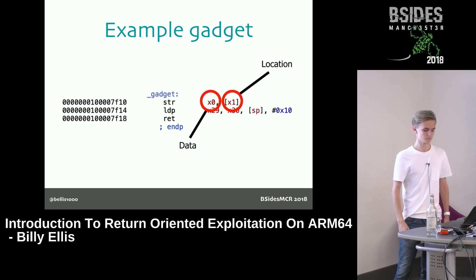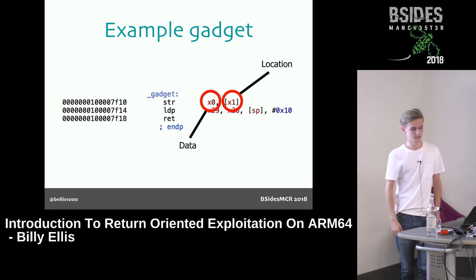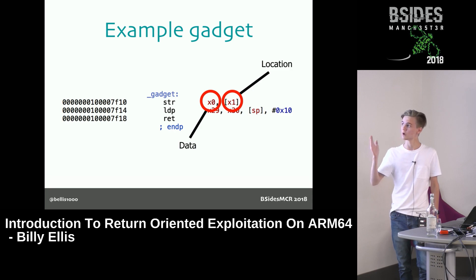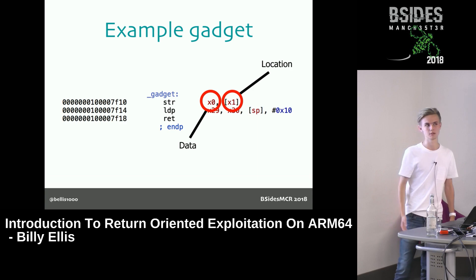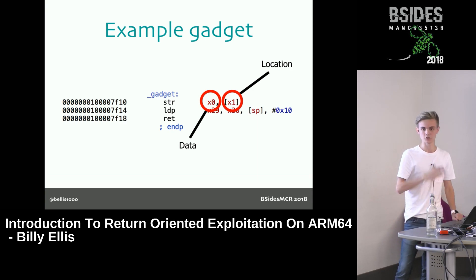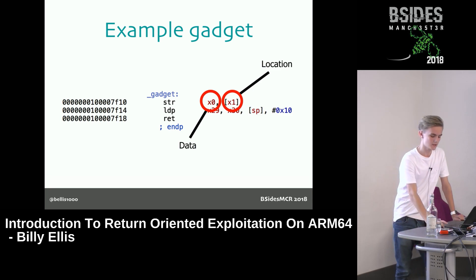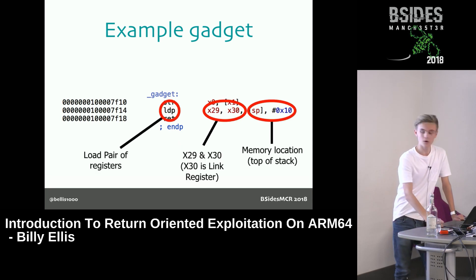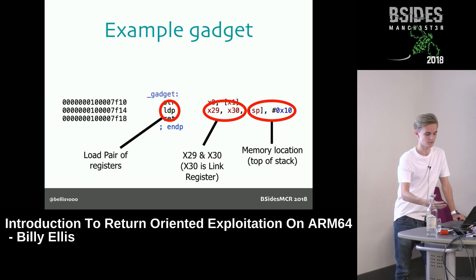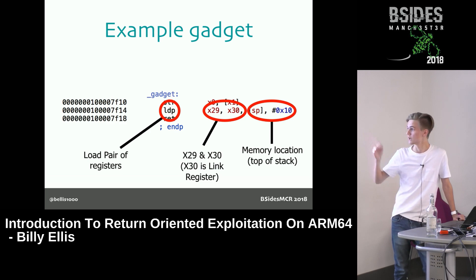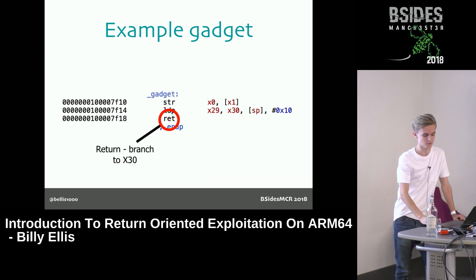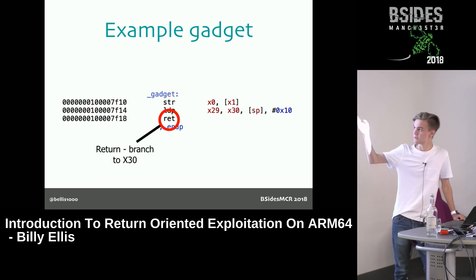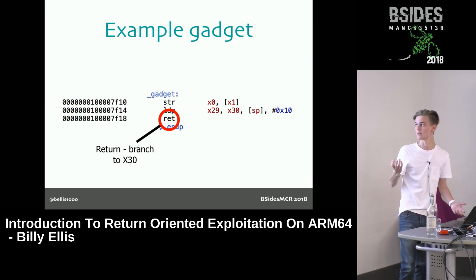Here's an example gadget on the ARM64 architecture. It consists of three instructions. The first is an STR instruction that stores the value of X0 to a memory location pointed to by X1. If an attacker can already control X0 and X1 beforehand, this gadget provides an arbitrary write primitive — they can patch any area of process memory. The last two instructions are just the return portion: loading a pair of registers and then branching to X30. The STR is the only desired instruction from this gadget.